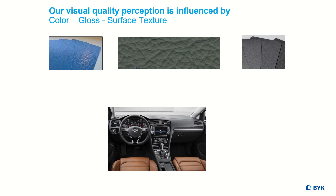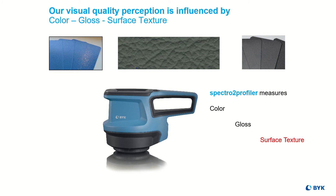Our visual perception is influenced by color, gloss, and the surface texture. Color and gloss meters have been on the market for quite a while, but their results do not include the effect of surface texture. Up to now, grain could only be judged visually or with highly sophisticated microscopes. This has changed with the Spectro 2 Profiler.